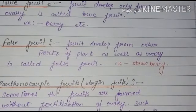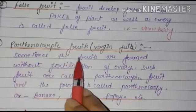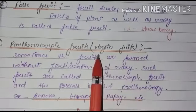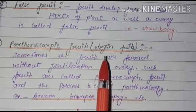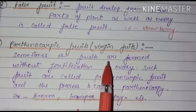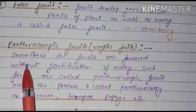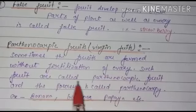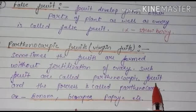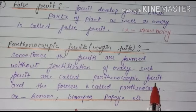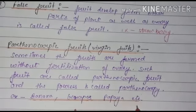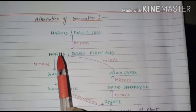The third type is parthenocarpic fruit, also called virgin fruit. Simply, it is the fruit which is developed without fertilization. Sometimes fruits are formed without fertilization of the ovary — such fruits are called parthenocarpic fruits, and this process is called parthenocarpy. Examples are banana, grape, and papaya.